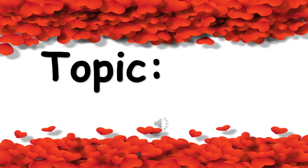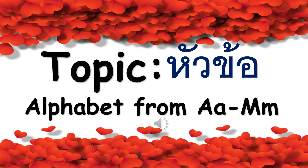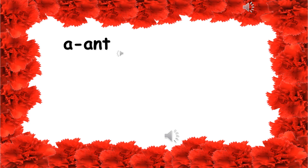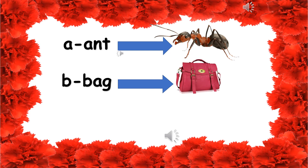Topic: Alphabet from A to M. A — Ant. B — Bag. C — Cabbage.